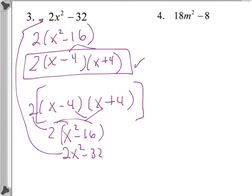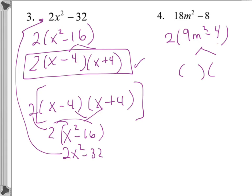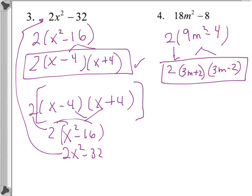For number 4, factor out the GCF, which is 2, giving us 2(9m² − 4). This binomial is a difference of squares: 9m² is a perfect square term since its coefficient is a perfect square and the exponent is even, and 4 is also a perfect square. So it factors into (3m + 2)(3m − 2). All of those are factors of 18m² minus 8.